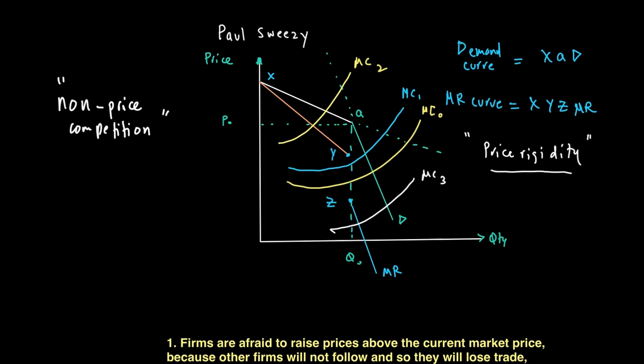Nonetheless, what we can see is that the Kinked Demand Curve theory does explain to us a couple of concepts. Number one is that it tells us the price rigidity, which is normally seen in oligopoly, and it also tells us the non-price competition that is also commonly found in oligopolies because of the price rigidity that takes place.